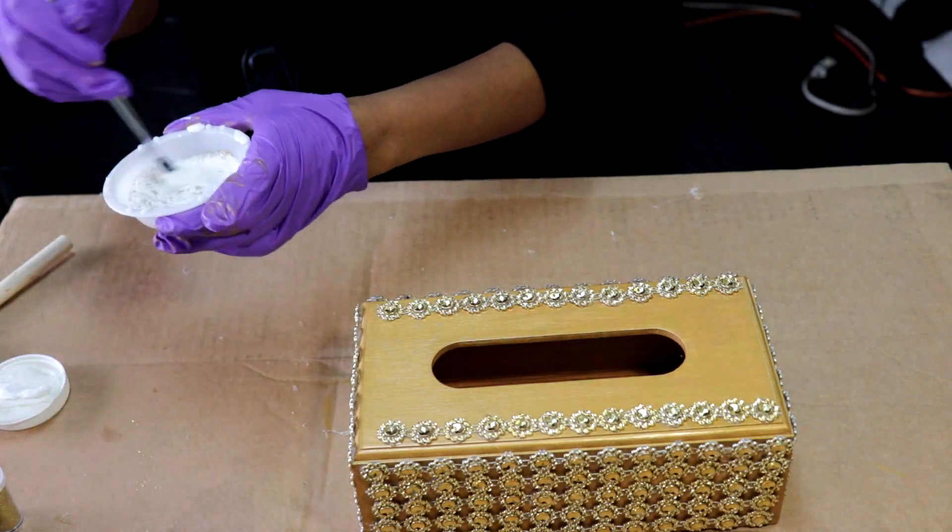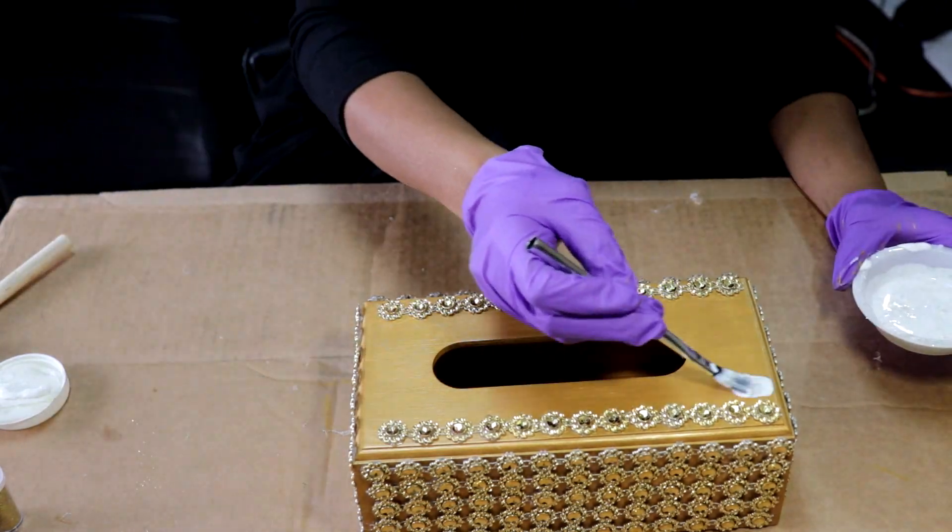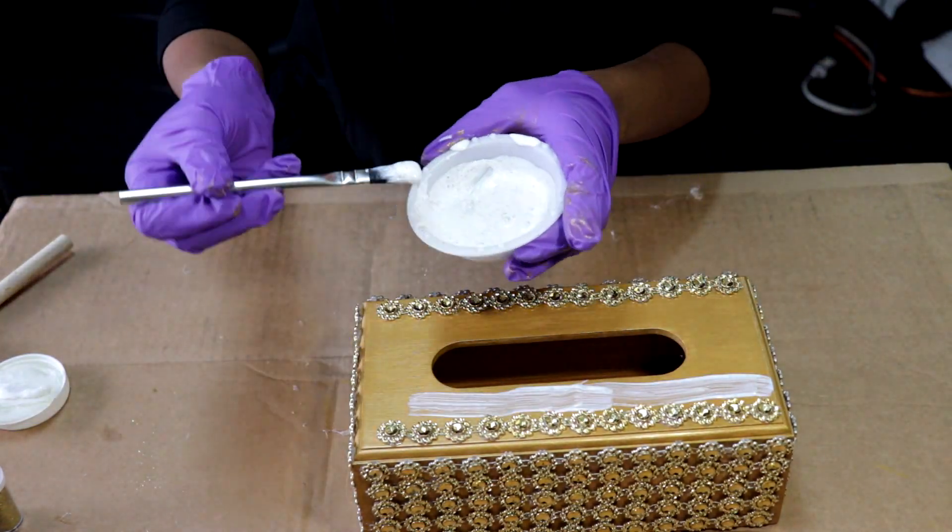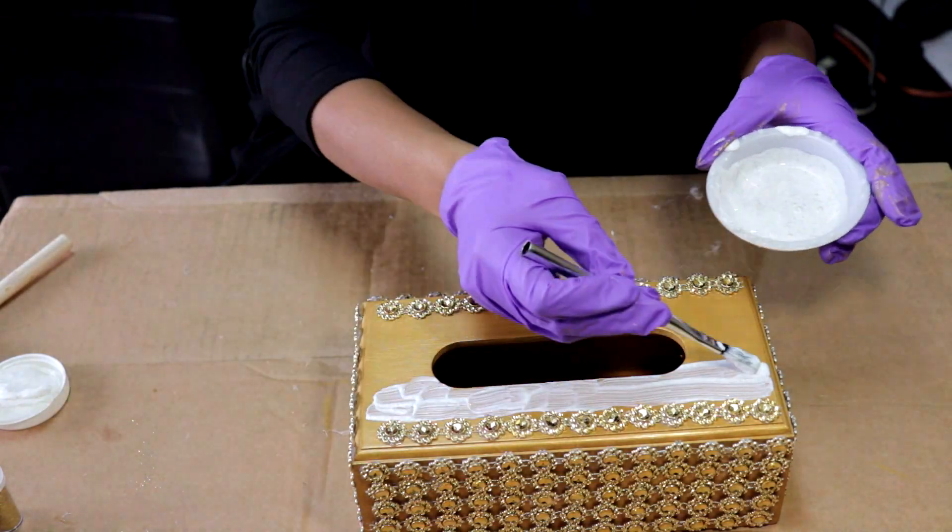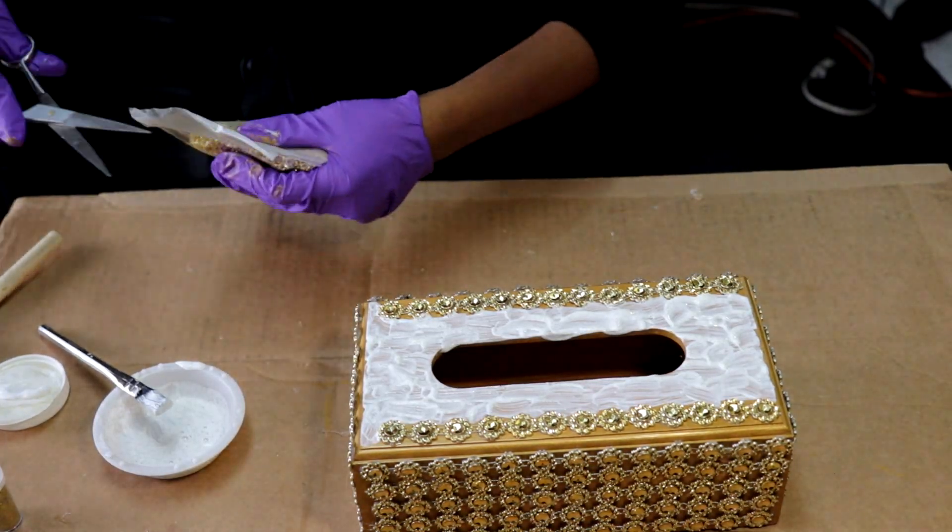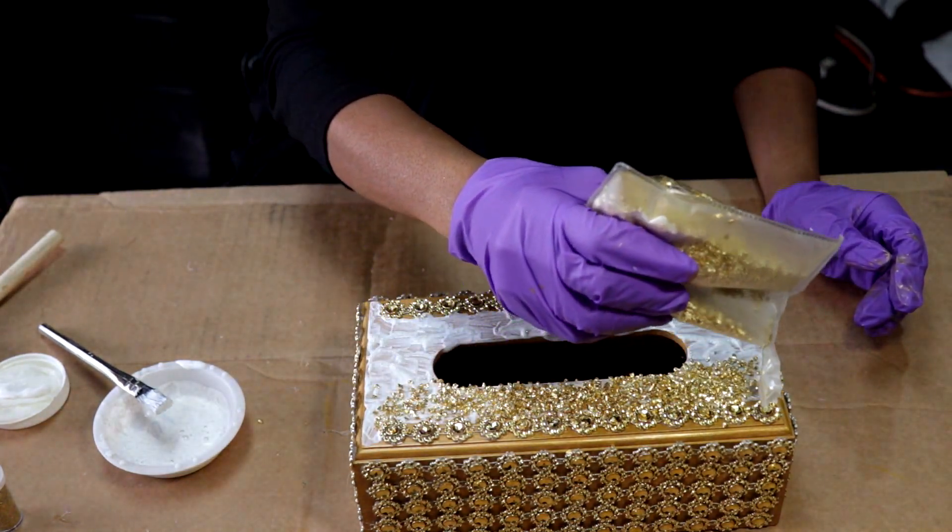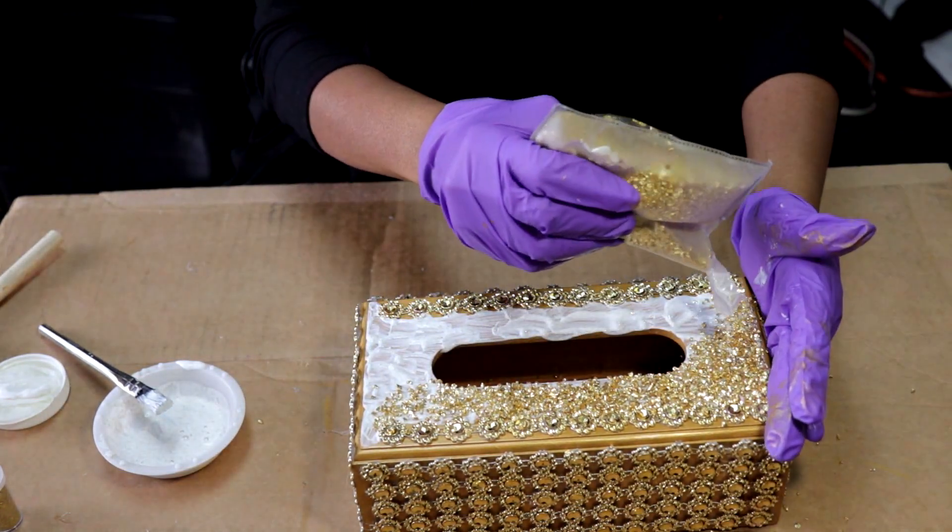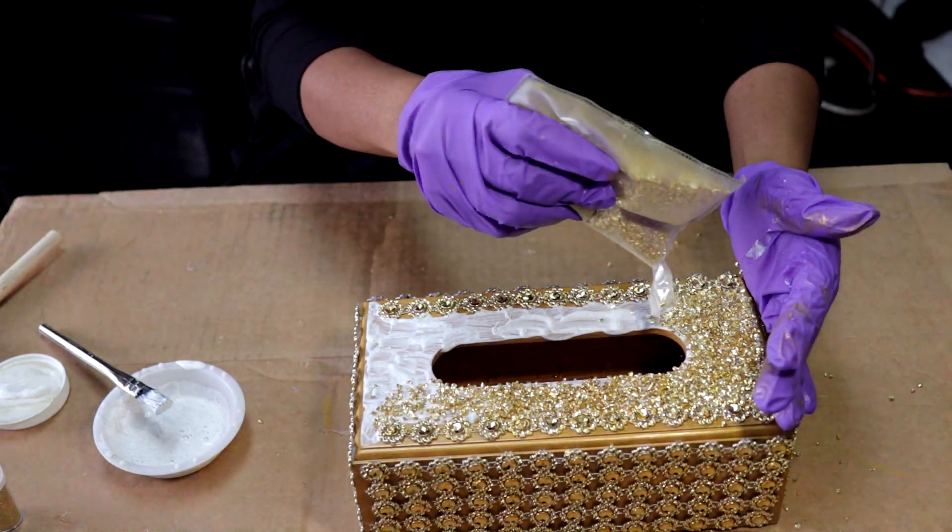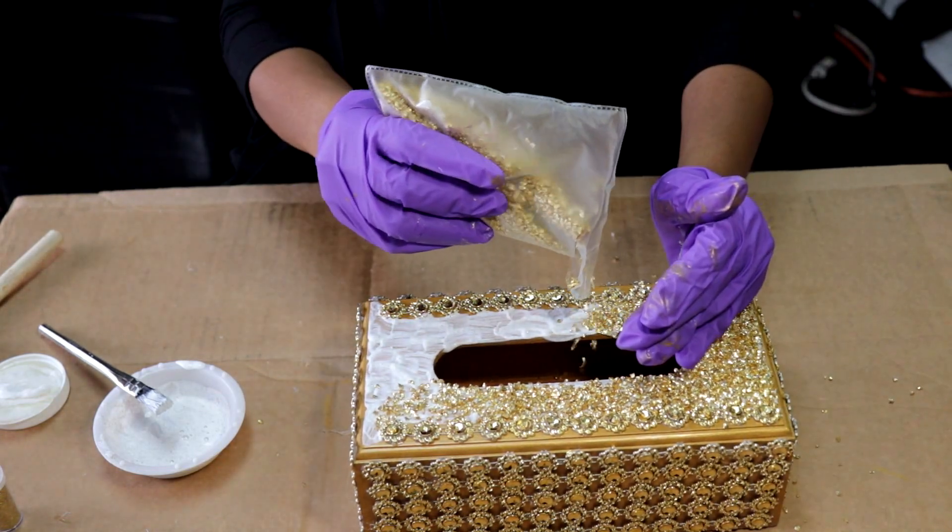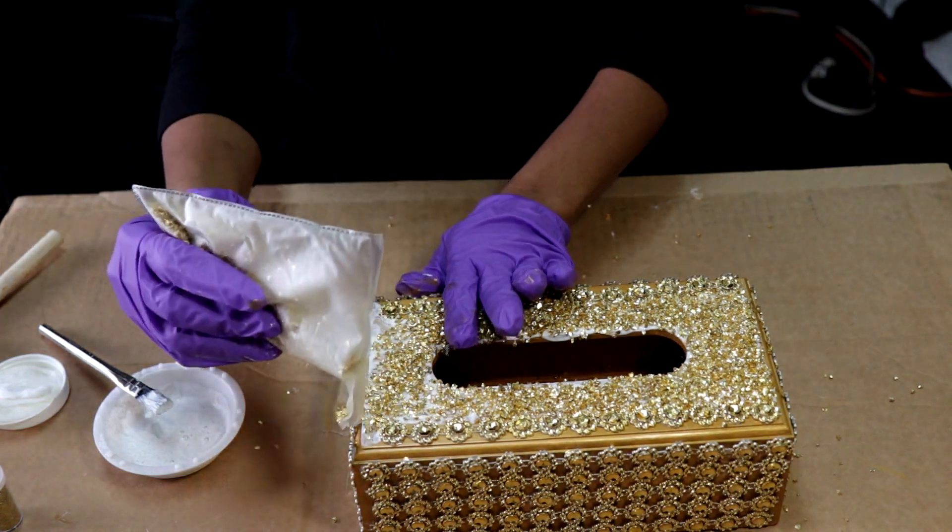Apply a decent amount to the top of the tissue box. Then grab your crushed glass and pour it over the Mod Podge, tilting the bag a little bit to keep control of the amount of glass that comes out.